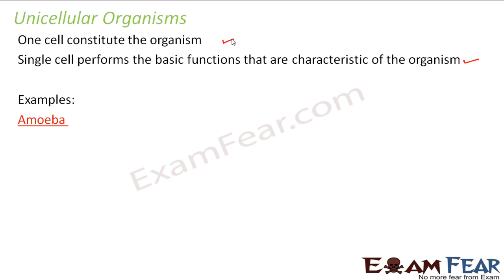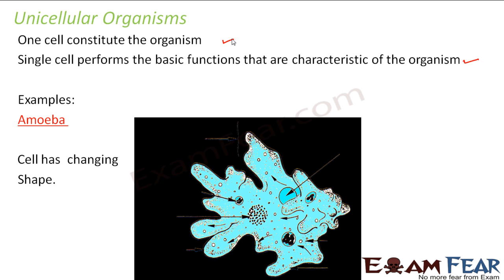In your higher classes, in class 11, you will study the animal and plant families in full detail. For now, you should just know that amoeba is a unicellular organism with just one cell. This is how an amoeba looks — the entire body of the amoeba is just one cell. Amoeba is a shapeless organism without a fixed shape.